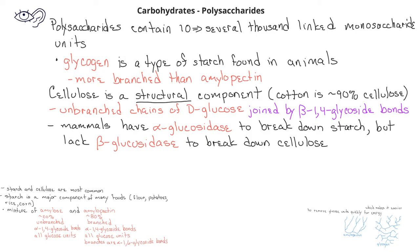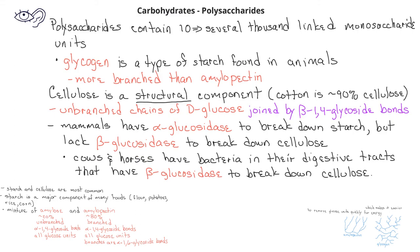However, mammals lack the beta-glucosidase enzyme needed to hydrolyze cellulose. There are animals that can consume cellulose-containing materials and get energy from it, such as cows or horses. They can do this because they have bacteria within their digestive systems that possess beta-glucosidase, allowing them to break down cellulose and derive energy from it.